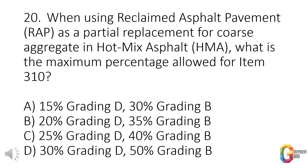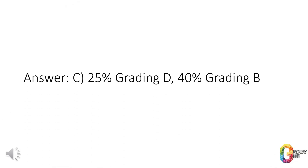Question 20. When using reclaimed asphalt pavement (RAP) as a partial replacement for coarse aggregate in hot mix asphalt (HMA), what is the maximum percentage allowed for item 310? A. 15% grading D, 30% grading B. B. 20% grading D, 35% grading B. C. 25% grading D, 40% grading B. D. 30% grading D, 50% grading B. Answer: C. 25% grading D, 40% grading B.